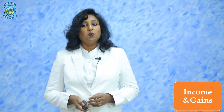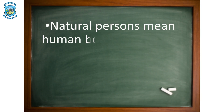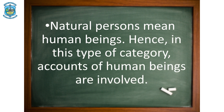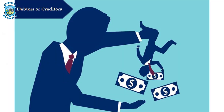Let us understand each one by one. First, we move to personal account. Personal account has been categorized in three parts: the natural person, artificial person and representative person. All the natural persons are human beings — that is, all the transactions which are related to human beings are included in natural person. For example, the owner, the debtor or the creditor. Debtors are the people who owe us, whereas creditors are the people to whom we owe.